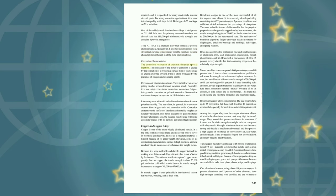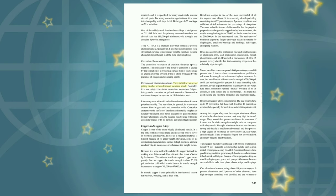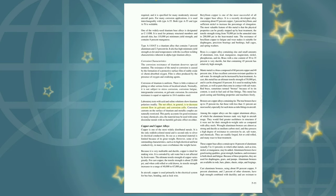Corrosion characteristics of titanium: The resistance of titanium to corrosion is caused by the formation of a protective surface film of stable oxide or chemi-adsorbed oxygen, often produced by the presence of oxygen and oxidizing agents. Corrosion of titanium is uniform; there is little evidence of pitting or other serious forms of localized attack. Normally, it is not subject to stress corrosion, corrosion fatigue, intergranular corrosion, or galvanic corrosion. Its corrosion resistance is equal to or superior to 18-8 stainless steel. Laboratory tests with acid and saline solutions show titanium polarizes readily, decreasing current flow in galvanic and corrosion cells. The material may also be used with some dissimilar metals with no harmful galvanic effect.